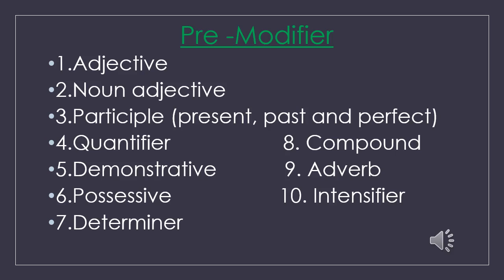Let's have a look on the slide. Number one: adjective. Number two: noun adjective. Number three: participle. Number four: quantifier. Number five: demonstrative. Number six: possessive. Number seven: determiner. Number eight: compound. Number nine: adverb. Number ten: intensifier.